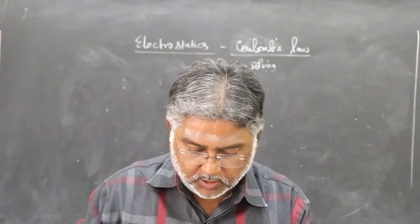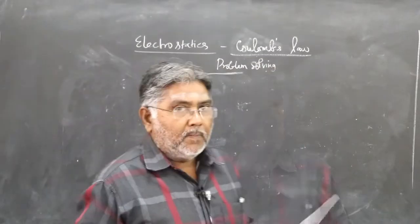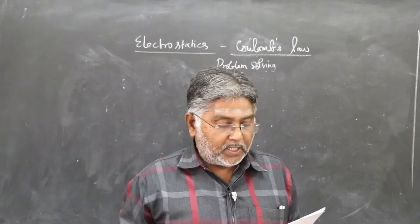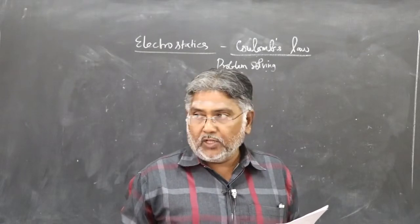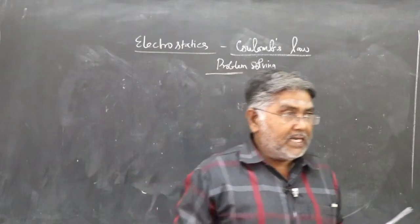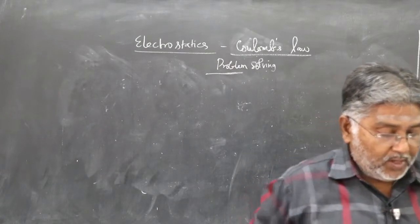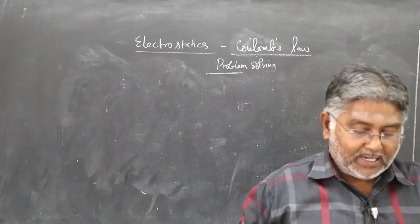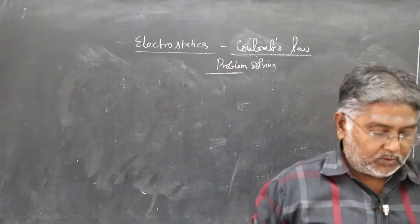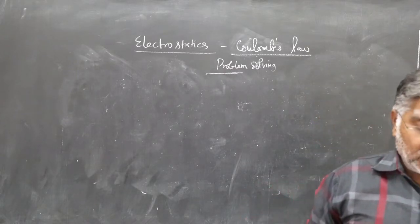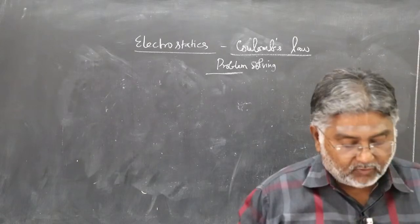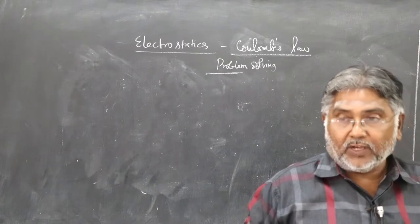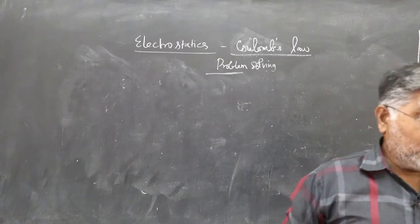I will read out the question. A simple pendulum consists of a small sphere of mass M suspended by a thread of length L. The sphere carries a positive charge Q. The pendulum is placed in a uniform electric field of strength E directed vertically downwards. Find the period of oscillation of the pendulum due to the electrostatic force acting on the sphere, neglecting the effect of gravitational force.